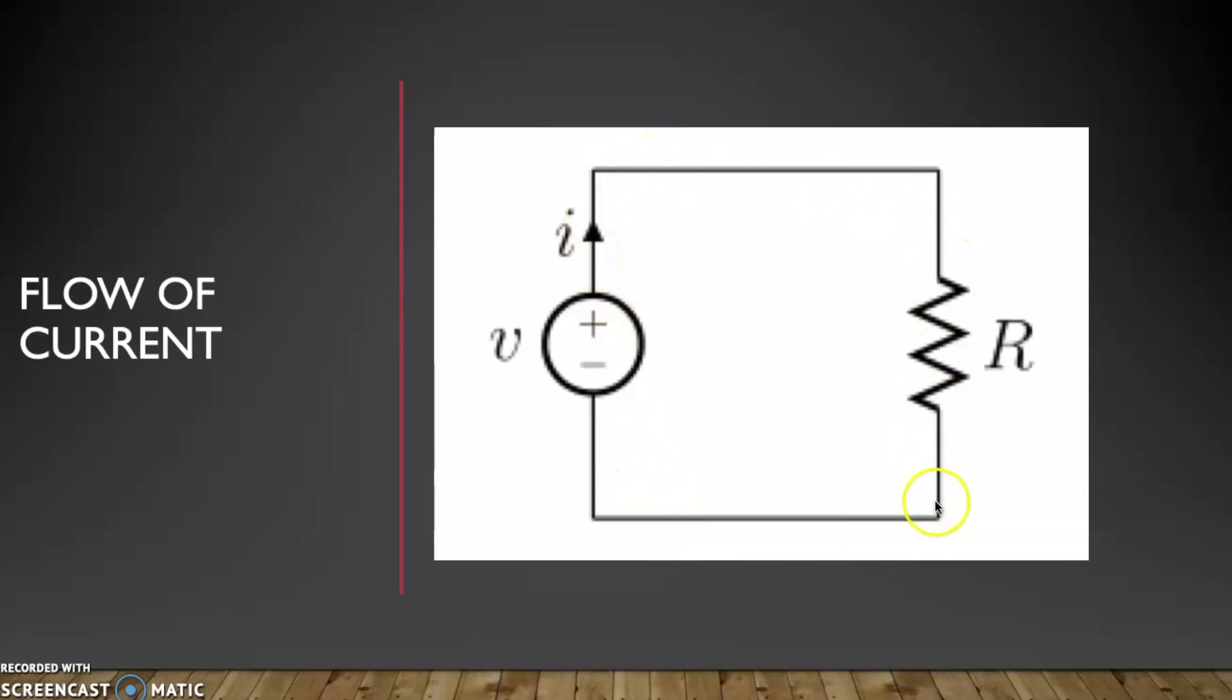Because we have electrons that are flowing this way because they want to meet our positive end right here. Therefore, this greatly shows that our current is opposite of electron flow. So current goes this way, electrons go this way.